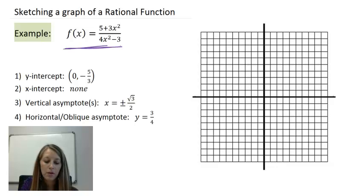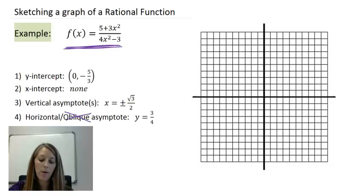I've given you the example that we've seen, and we found our y-intercept as negative five-thirds. We do not have any x-intercepts. We have two vertical asymptotes, one at positive root 3 over 2 and one at negative root 3 over 2. And then we had a horizontal asymptote at y equals three-fourths. So I'm going to plot all of this information on the graph. Now if I look at all my numbers here, I see they're all quite small, so instead of making my tick marks represent by one, I'm actually going to go by twos here.